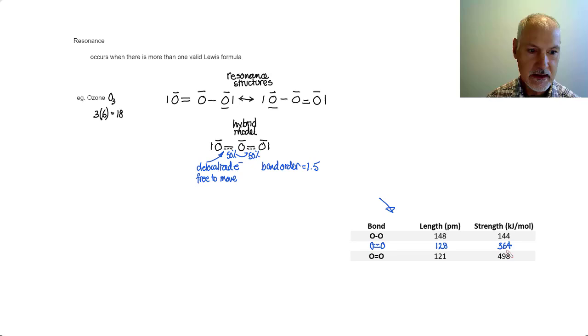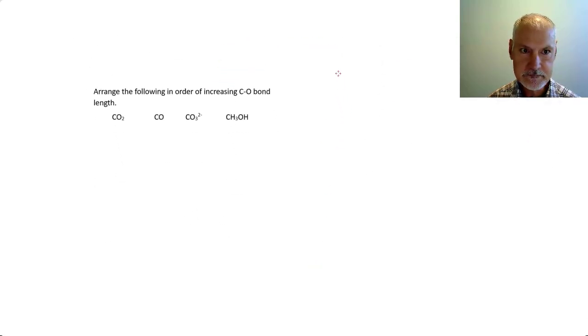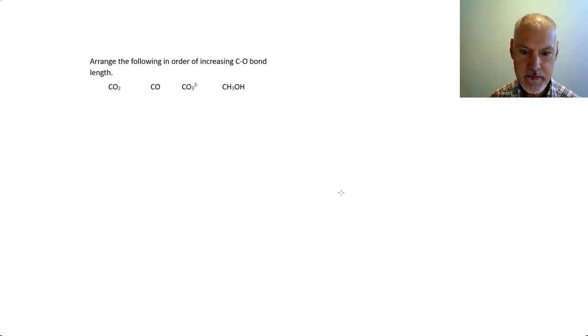So let's take this idea of resonance structures and see how it applies to the following question. Here we're asked to compare the bond length of the carbon-oxygen bond in the following four substances. To start this problem, I'm going to consider their Lewis structures.